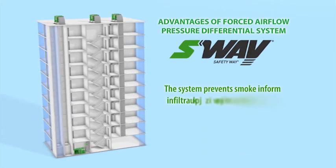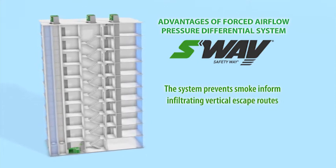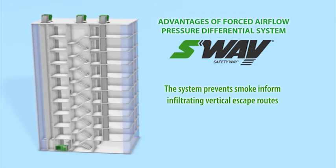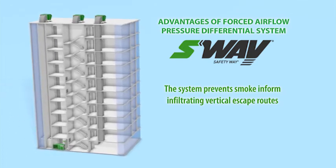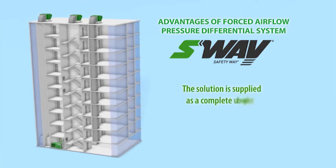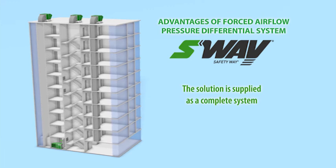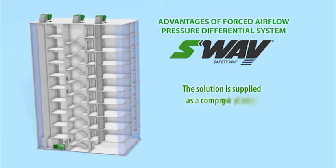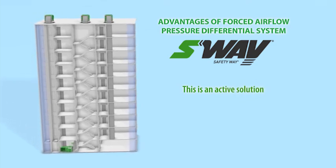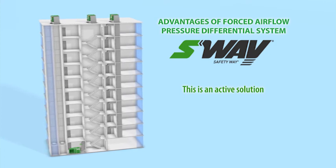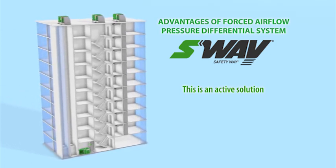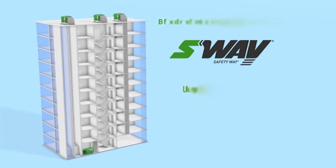The system prevents smoke from infiltrating vertical escape routes in the event of a fire in residential, office and industrial buildings, regardless of how tall they are, the time of year, temperature differences or wind forces. The solution is supplied as a complete system optimized for use in a given building. This is an active solution, allowing for simple adjustments of settings, monitoring the current operational parameters, as well as automatic adjustment to rapidly changing parameters such as air temperature or wind.